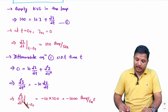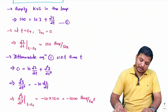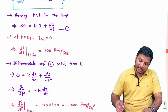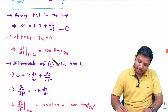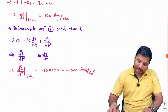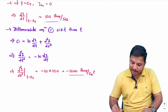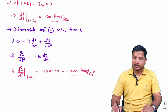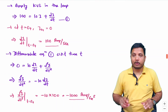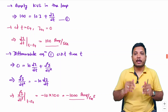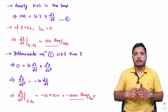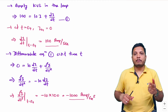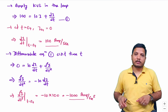This is how we identify initial conditions. The initial current is 0, di/dt is 100 A/s, and the double differentiation of current — the acceleration of current — is minus 1000 A/s². I hope you have understood this. If you have any further queries, place them in the comment box and I will definitely sort them out. Thank you so much for watching.